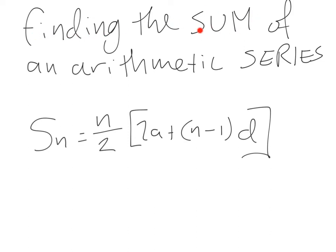Finding the sum, sum means add, of an arithmetic series using the formula Sn equals n over 2 bracket 2a plus n minus 1 times d. The n is the number of terms in the sequence.